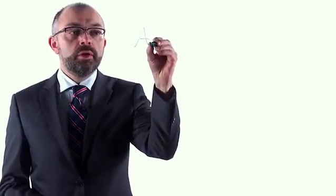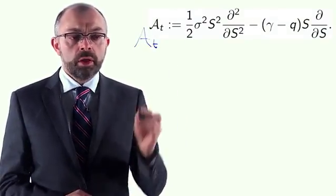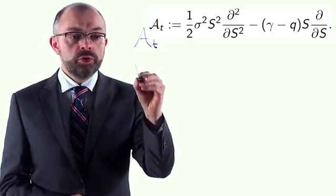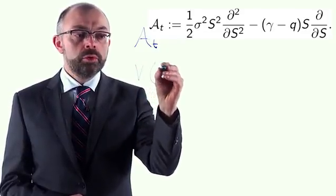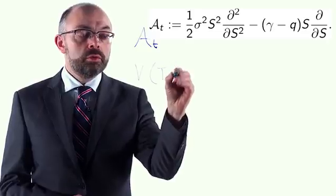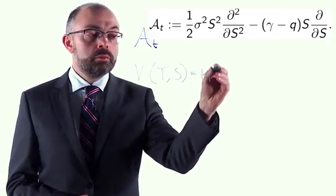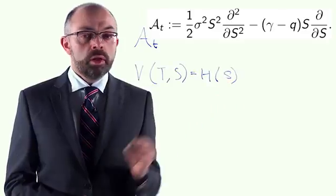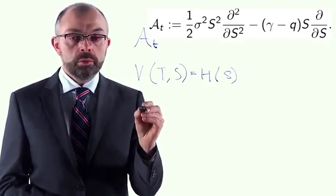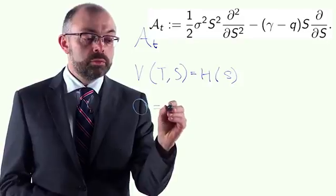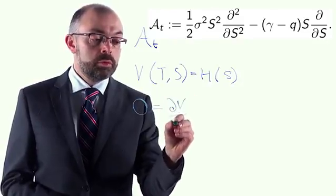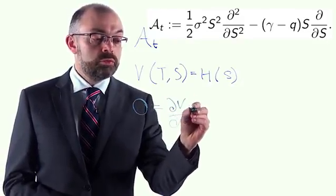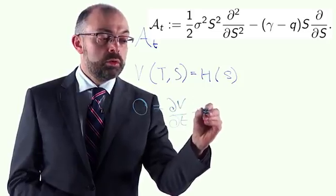We call the Black-Scholes-Merton PDE formula. Firstly, we define an operator A to simplify the algebra. Next, I write down a terminal condition for the equation, which gives the payoff. And finally, we write down the Black-Scholes PDE itself, which is an expression for the value V of the derivative.